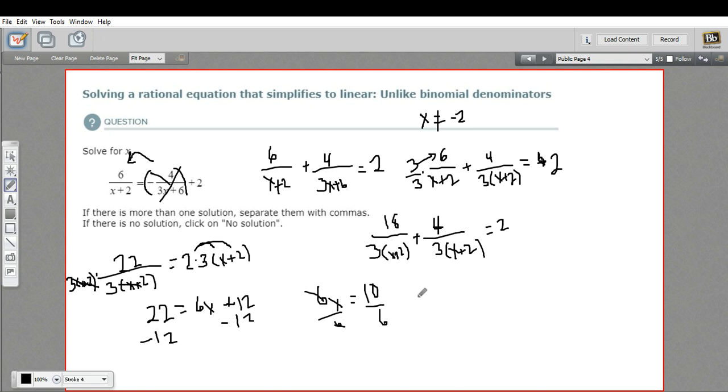And then I need to just check back in with these excluded values. The excluded value, the only one I had, was negative 2. This is not the excluded value, so this is a valid solution for this rational equation. So that is a little bit of work with rational equations.